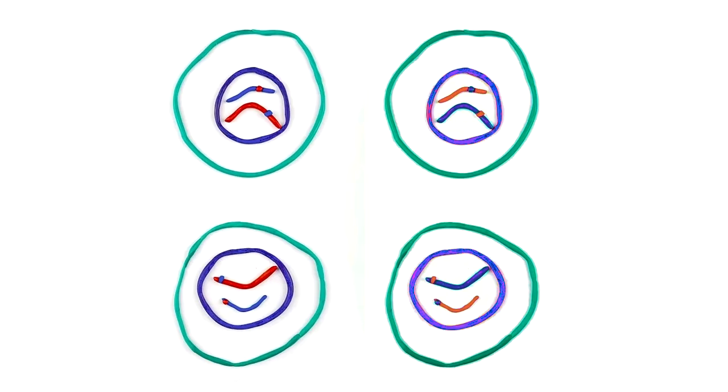In meiosis II, each cell will divide again to form four cells with 23 single-stranded chromosomes.